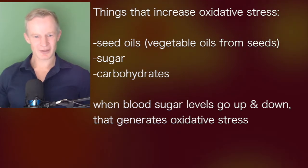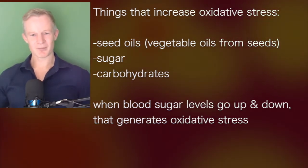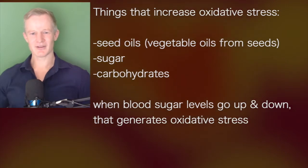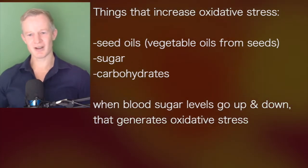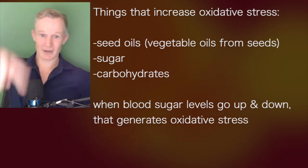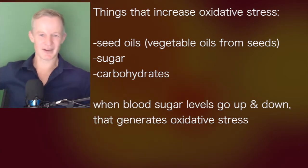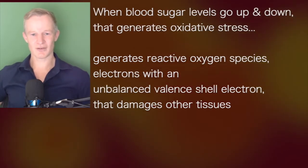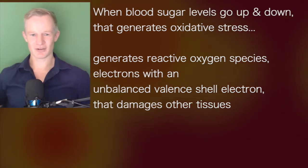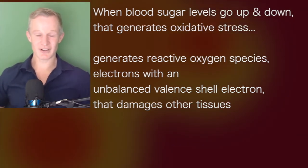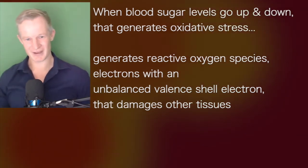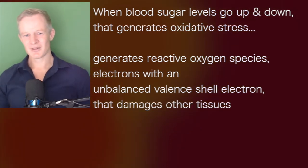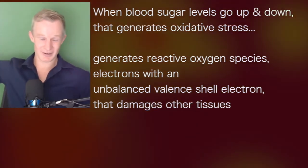There are some things that we know that increase oxidative stress, and that's seed oils and too much sugar or too much carbohydrates. When blood sugar levels are going up and down, we've got very good evidence that generates oxidative stress — reactive oxygen species, electrons with an unbalanced valence shell electron that can actually damage other tissues. So you don't want your sugar to be going up and down every other moment.